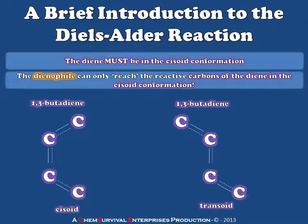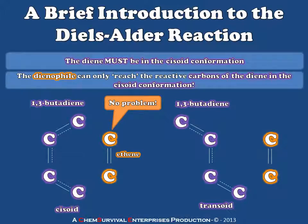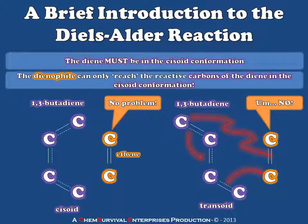When a dienophile approaches a cisoid diene, it can react. But when it approaches a transoid diene, it can't. Let's place our dienophile in a reactive position next to the cisoid conformation — as you can clearly see, a reaction is going to take place. But when we put that same ethene molecule next to the transoid butadiene, look at how far apart the reactive carbons are. There's simply too much space between the two carbons we're trying to join, so no reaction will take place. Therefore, the Diels-Alder reaction requires that the diene be in the cisoid conformation.